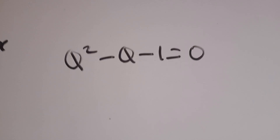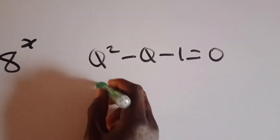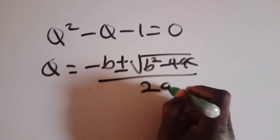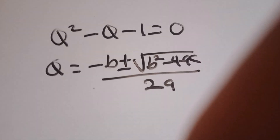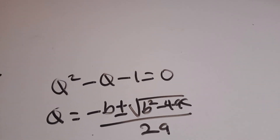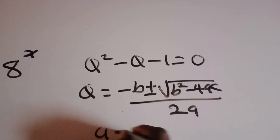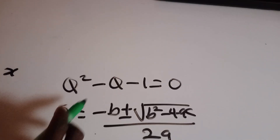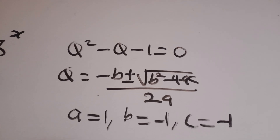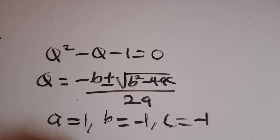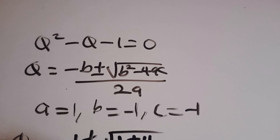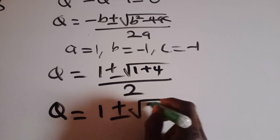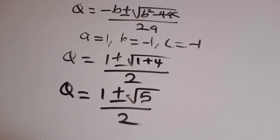Since q squared minus q minus 1 equals zero is a quadratic equation, I'll apply the quadratic formula: q equals negative b plus or minus square root of (b squared minus 4ac), divided by 2a. From the equation, a equals 1, b equals negative 1, and c equals negative 1. Substituting these values, q equals (1 plus or minus square root of (1 plus 4)) divided by 2, which gives q equals (1 plus or minus square root of 5) divided by 2.